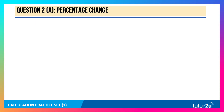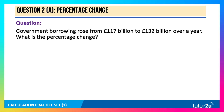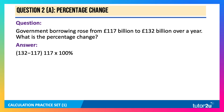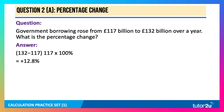Question number two: percentage change. Government borrowing increased from £117 billion to £132 billion over a year. What is the percentage change? The formula is the change divided by the original, multiplied by 100. So it's 132 minus 117, divided by 117, multiplied by 100, giving a percentage change of plus 12.8%.